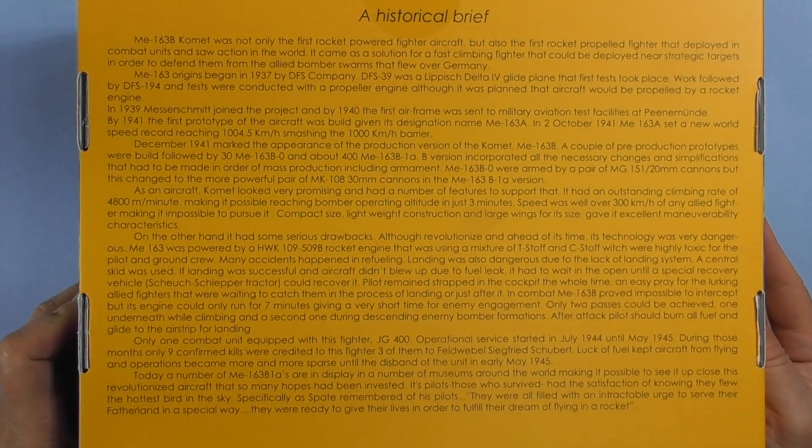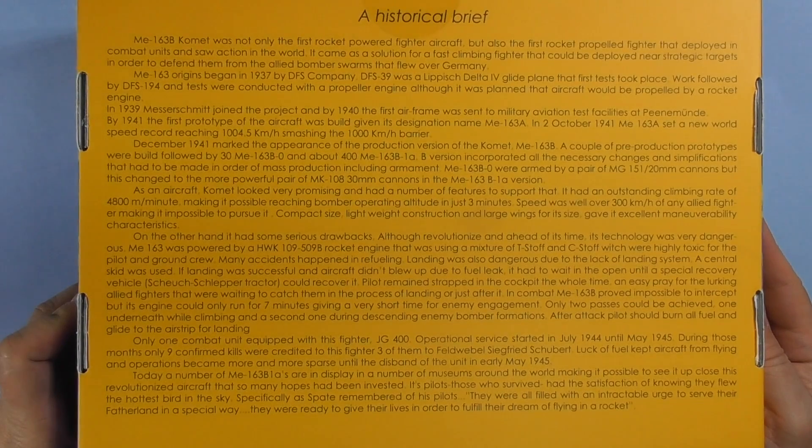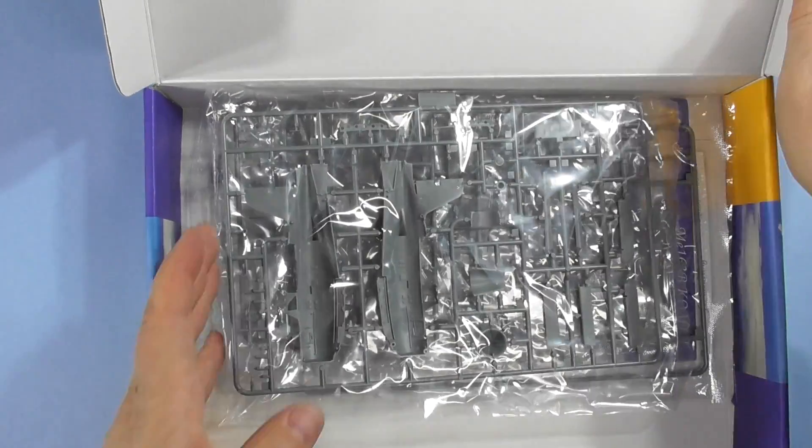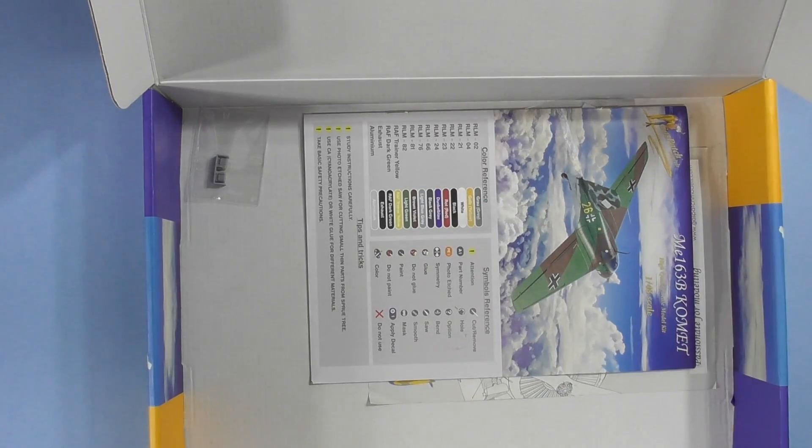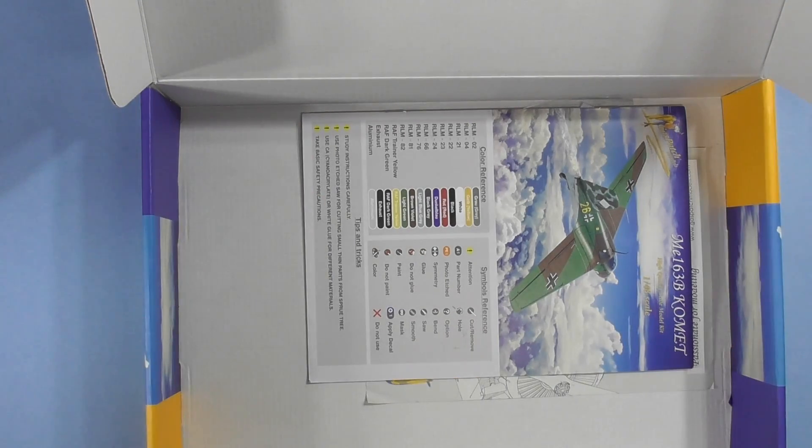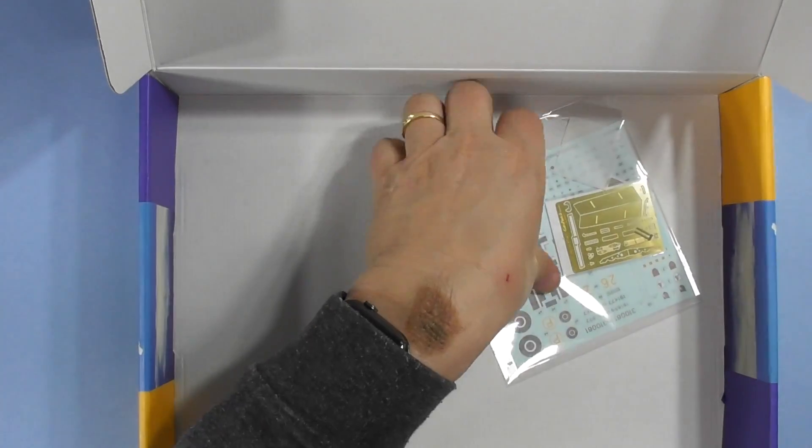Some safety things in various languages, and on this side a historical brief about the Me163 Comet. Pause it, read it if you can. We are in high def 1080. I love their boxings - they're beautiful, they're sturdy. We've got four sprues, one clear sprue.